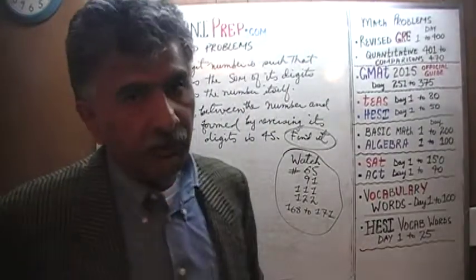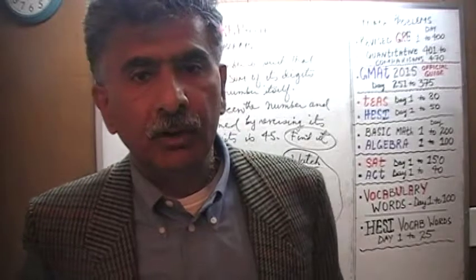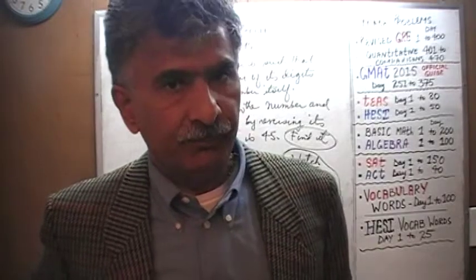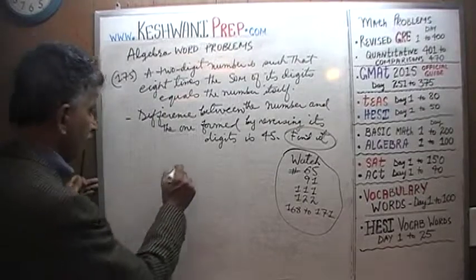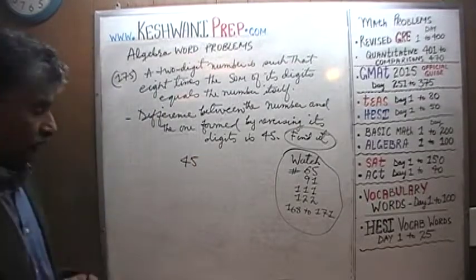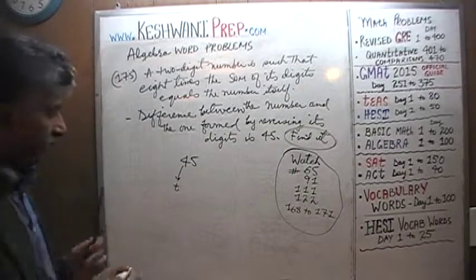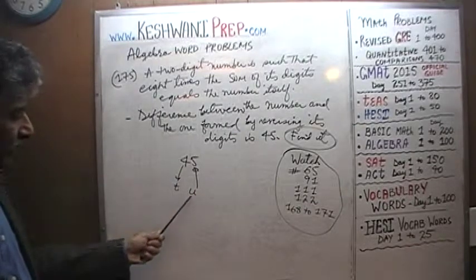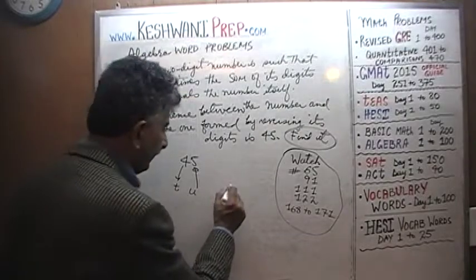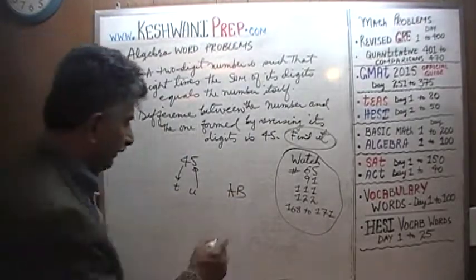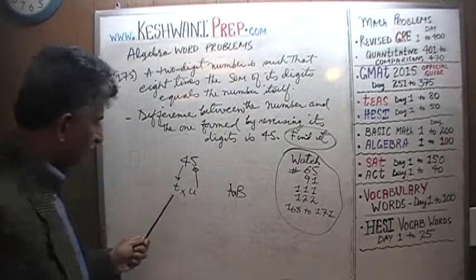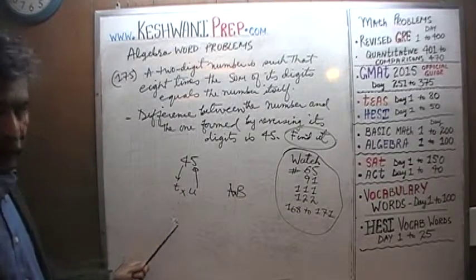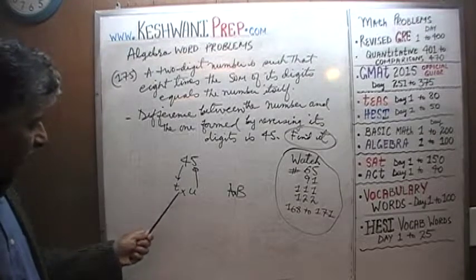How do we represent a two-digit number using algebra? For example, let's talk about 45. If you let T represent the tens digit and U represent the units digit, do we represent 45 simply as TU? No — because TU in algebra means T times U. If T is 4 and U is 5, TU represents 20, not 45.